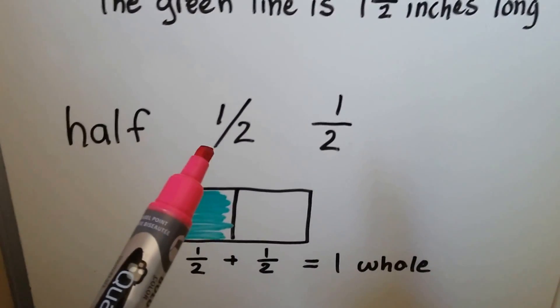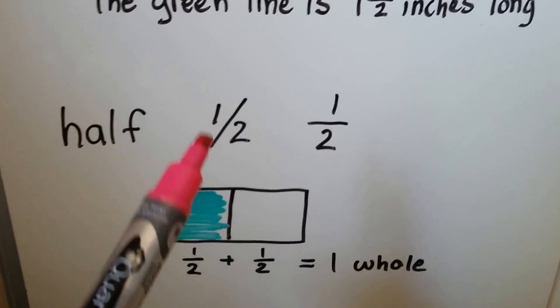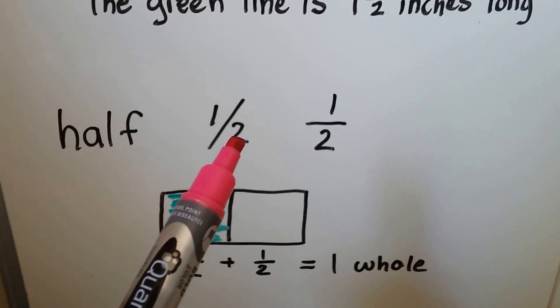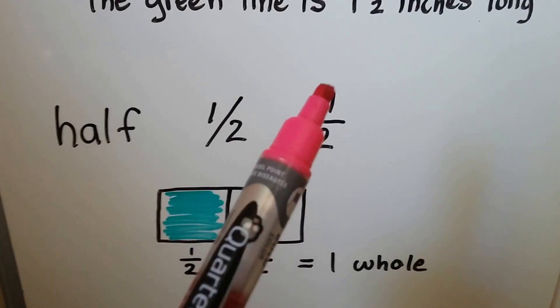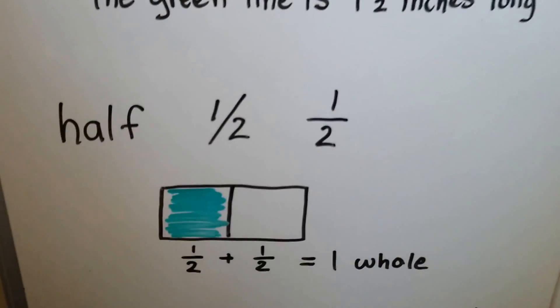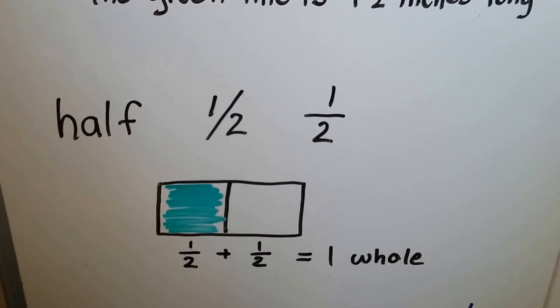You can see a half written like this with a slanted line, the one and then a slanted line and a two. You might see it like this with a one and then a straight line and then a two underneath it, like that. But writing the half like this with the straight line makes math easier.